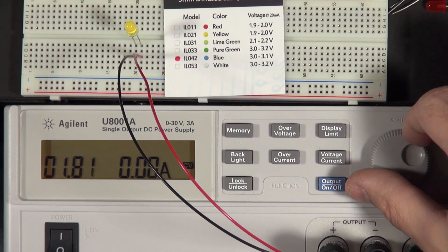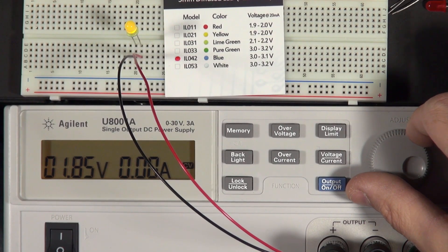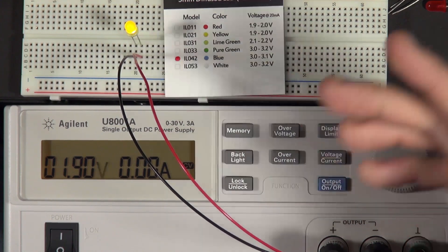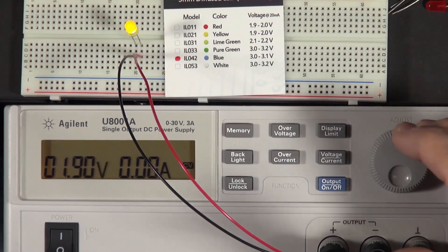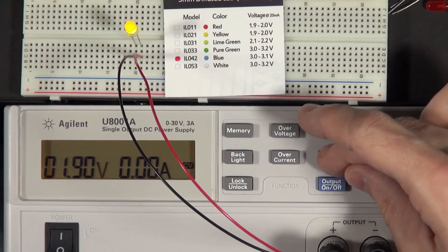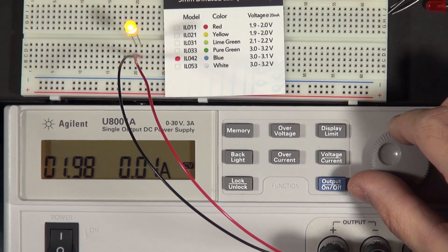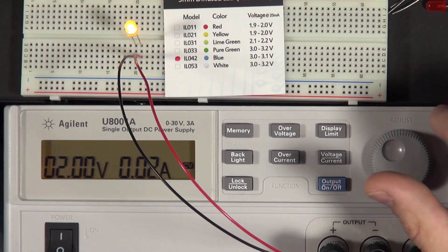And as we increase, now the LED is really starting to get bright, and you can probably see that now on the video. And now we're at 1.9 volts, and the LED is clearly on. And we can continue to increase to 2 volts, and it gets a bit brighter, and that's 2 volts.